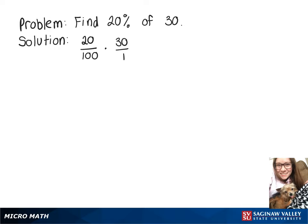Now since we're multiplying fractions, we can multiply across the top, giving us 20 times 30, over 100 times 1, which is just 100.